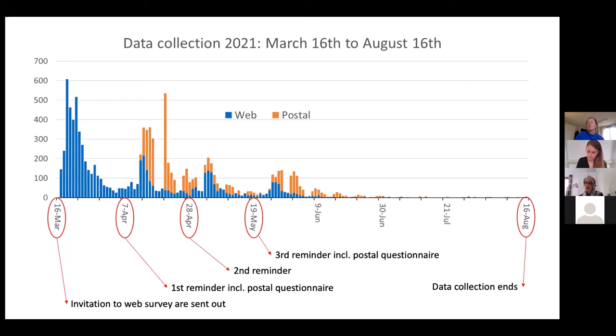There's a question about how the two-language option worked. The paper questionnaire was only in Swedish. In the missive letter we told respondents that in the web version they could use English or Swedish. In the web survey, on the first page, they could click to switch to an English version. So that was a web-only solution.